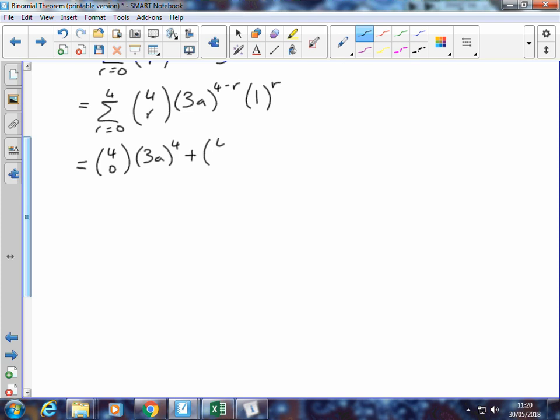So we can say that we've got 4 choose 1, and this time if r is 1, then we've got 3a to the power of 4 minus 1 is 3, multiply by 1 to the power of 1 which is 1. Writing out the rest of them. And if the last term becomes 4 choose 4, because we're going up to 4, we'll effectively get 3a. I'll write it in just to emphasize the fact that it's 3a to the power of 0, which in itself is 1.